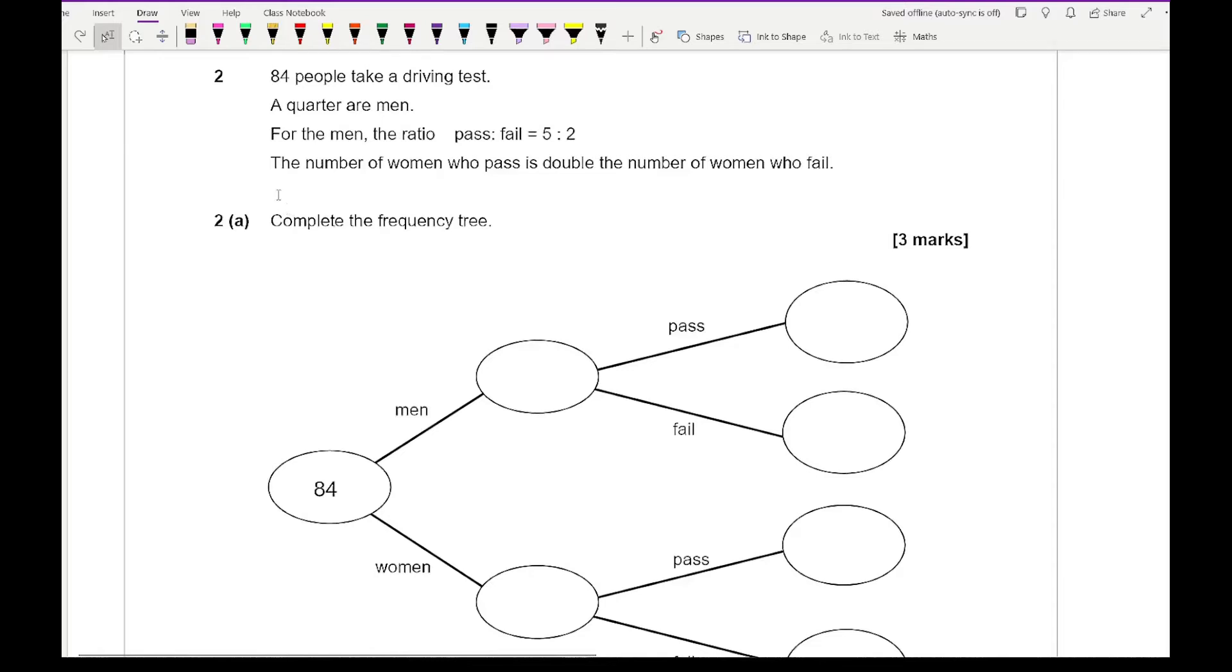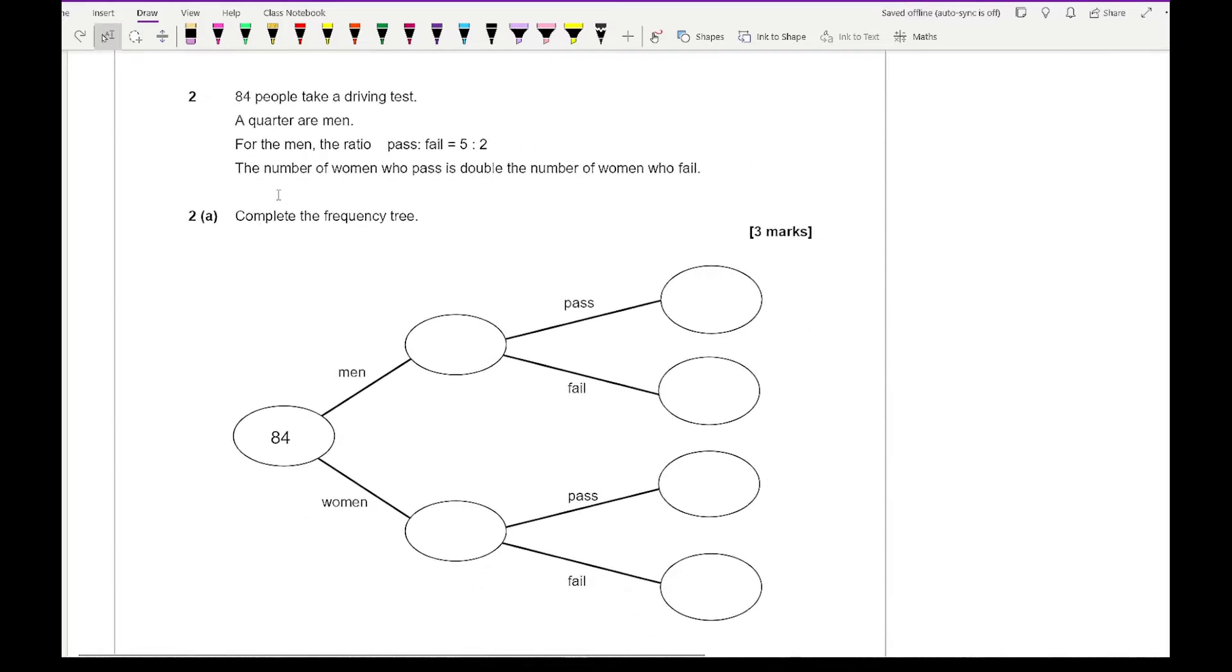Moving on to question two, it says 84 people take a driving test, a quarter are men. For the men, the ratio pass to fail is 5 to 2. The number of women who pass is double the number of women who fail. And what we need to do here is complete the frequency tree. Looking at this, we've got 84 people in total, and a quarter of them are men. So if I divide 84 by 4, I get 21, so that means that 21 are male. And if I do 84 take away 21, that's going to give me 63 are female.